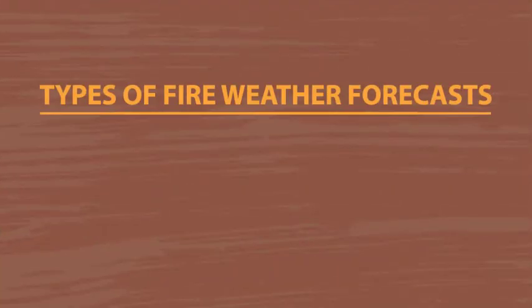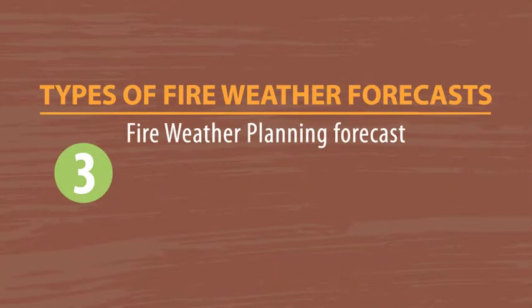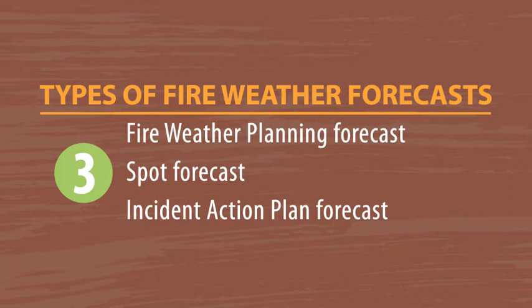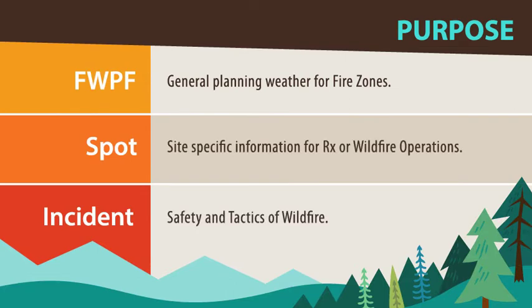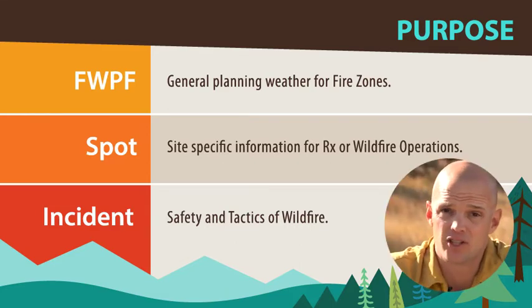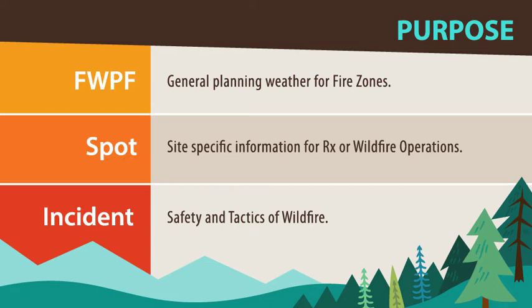Now you know what is in a fire weather forecast, but there are several different types you need to pay attention to. There are three types of narrative fire weather forecasts: the fire weather planning forecast, the spot forecast, and the incident or incident action plan forecast. The fire weather planning forecast is the most general and is provided as a decision-making tool for pre-suppression planning — use it at the start of your shift to improve situational awareness. The spot forecast provides specific and actionable weather information for wildland fire and prescribed fire operations. The incident forecast is created specifically for fulfilling incident or ongoing fire suppression objectives.